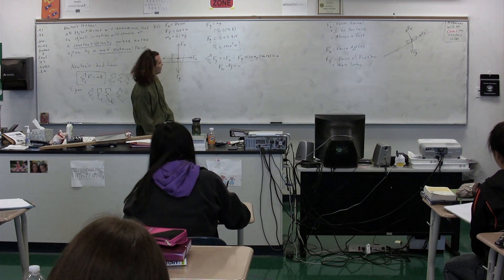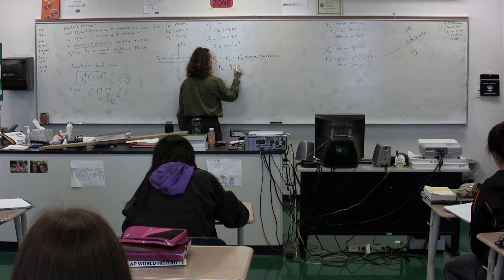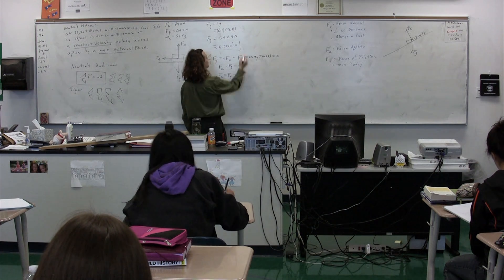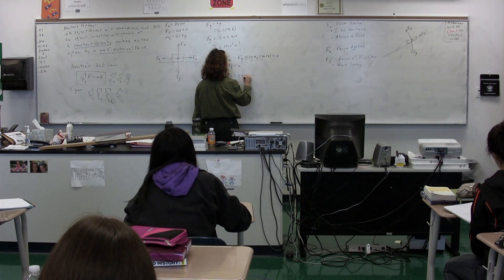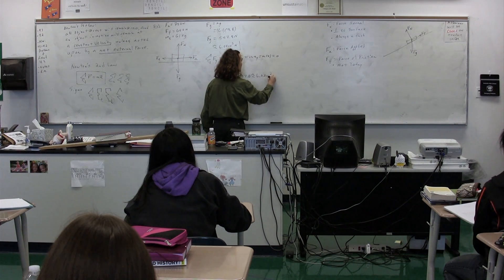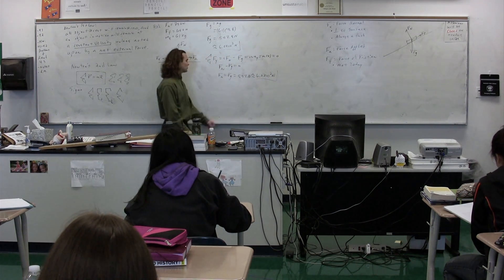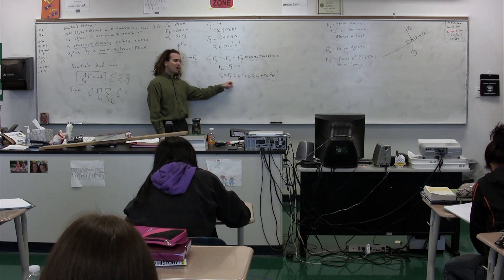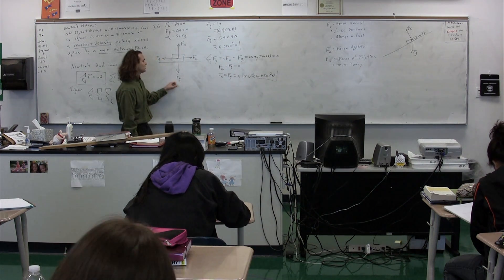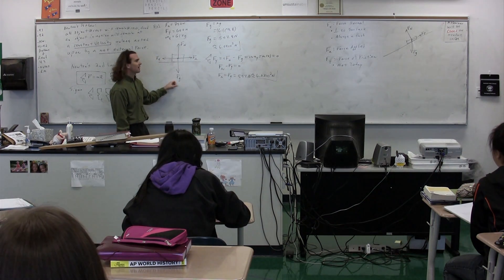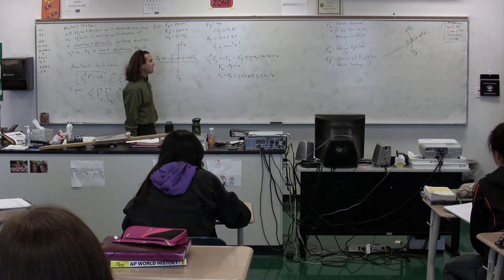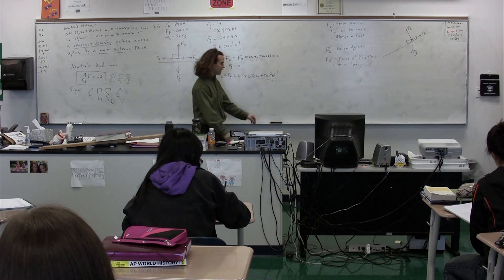We can add the force of gravity to both sides and get that the force normal equals the force of gravity, which is equal to 597.8 — or 6.0 times 10 to the second newtons. The force normal and the force of gravity have the same magnitude but they're in opposite directions, as you can see in the free body diagram. The magnitude comes from the equation; the direction comes from the free body diagram.